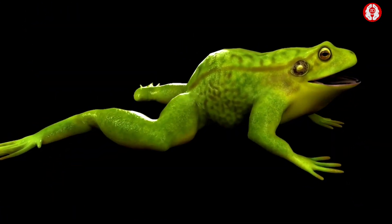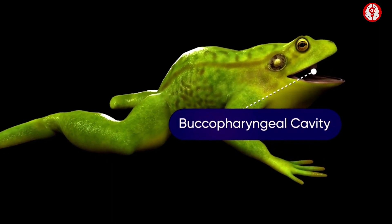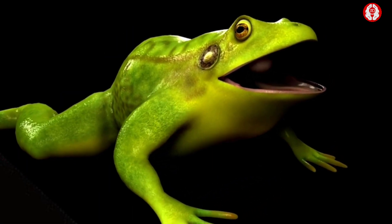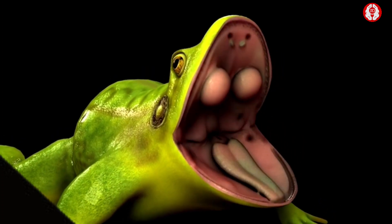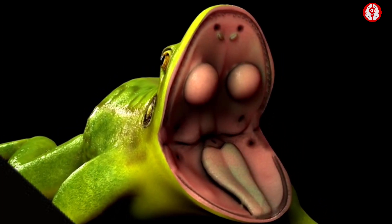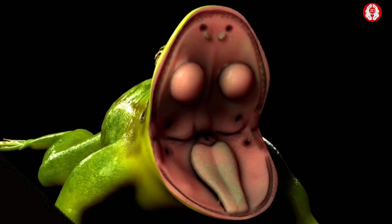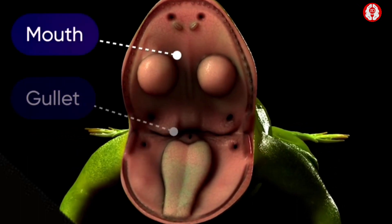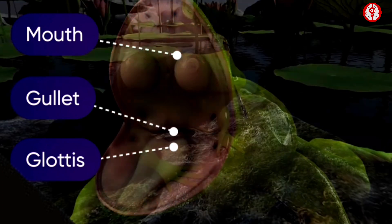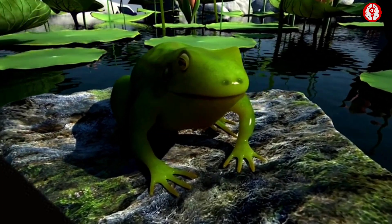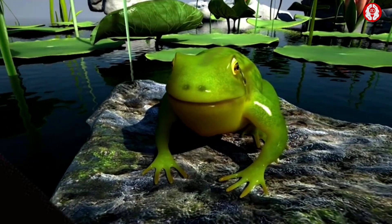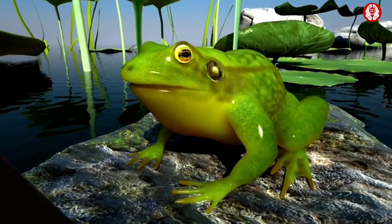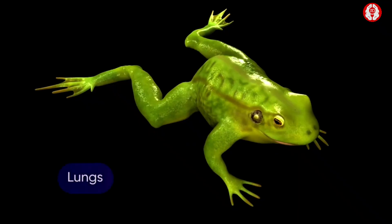Frogs respire through their buccopharyngeal cavity while floating on water and when resting on land. This type of respiration is called buccopharyngeal respiration. The thin, vascularized, and moist lining of the buccopharyngeal cavity aids in this type of respiration. During the process, the mouth, gullet, and glottis remain closed, but the external nares are open. The floor of the cavity exhibits oscillatory movements that allow air to move in and out, thus facilitating gaseous exchange.